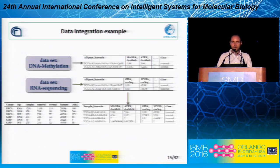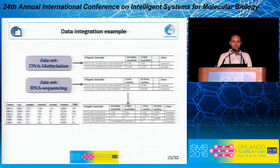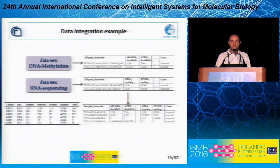We can see here a data integration example where you have the dataset of DNA methylation and a dataset of RNA sequencing extracted from TCGA — for instance, the breast cancer data. You can easily obtain a data matrix where you have the samples on the rows and the gene expression values on the columns, and also the DNA methylation values on the columns, so that you have an integrated data matrix composed of RNA-seq and DNA methylation data.